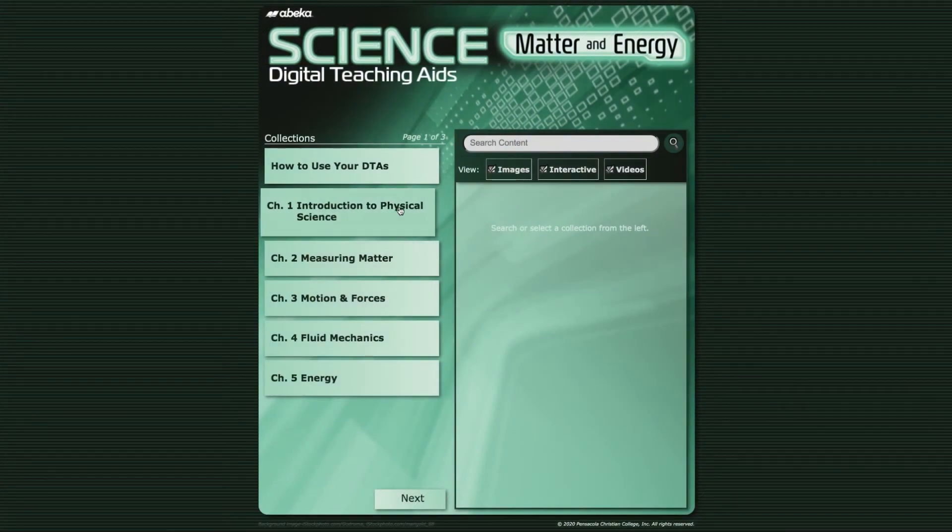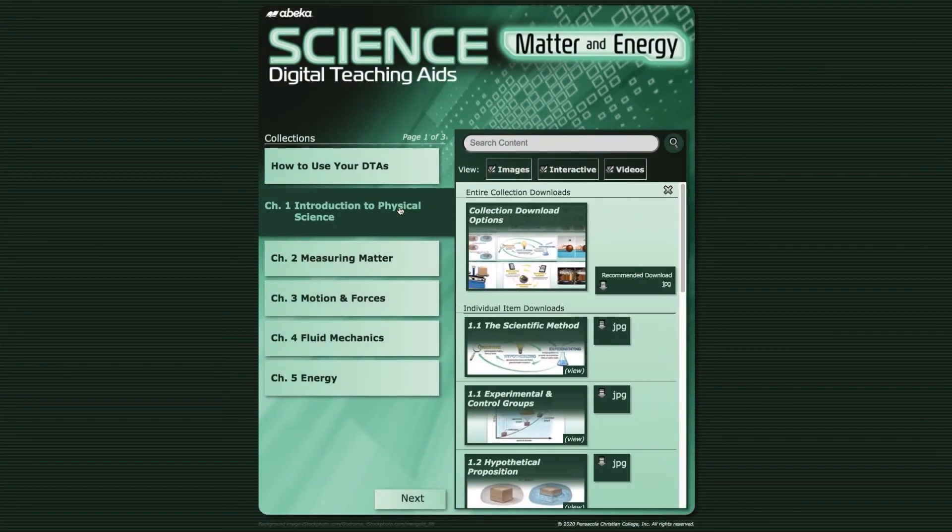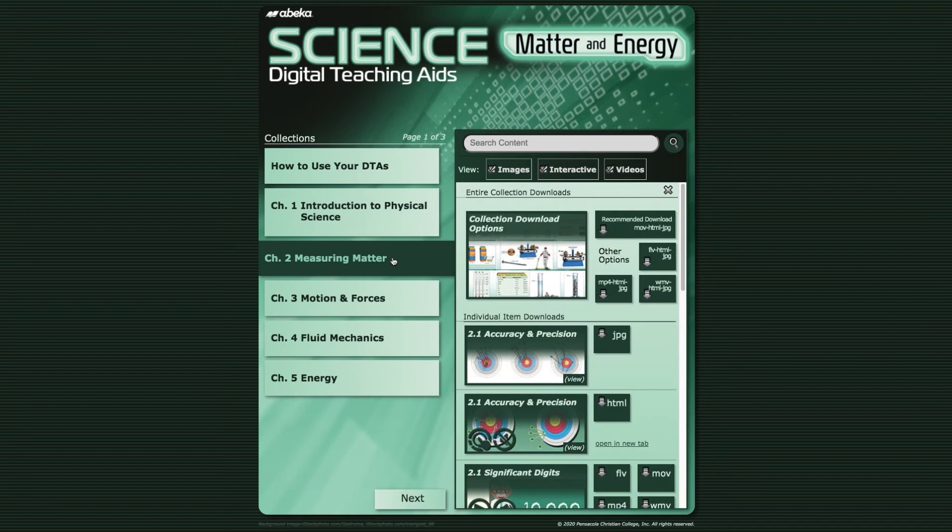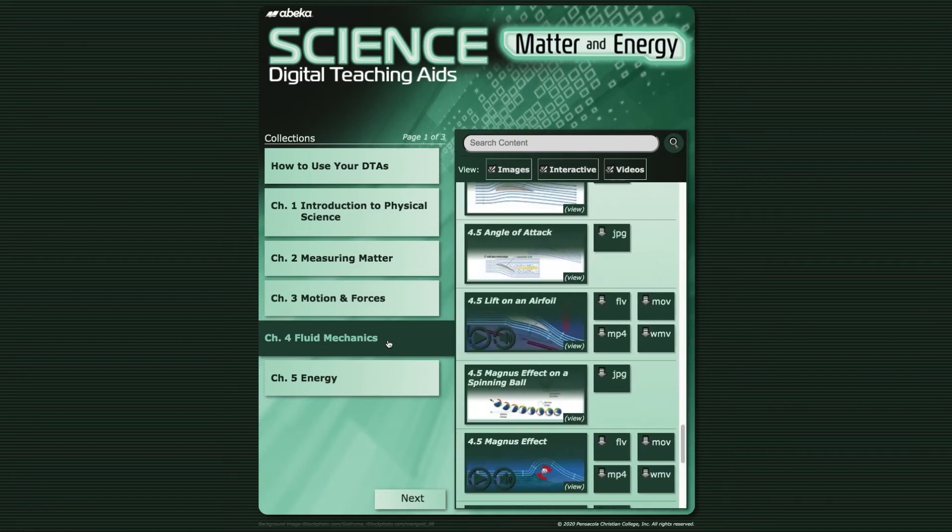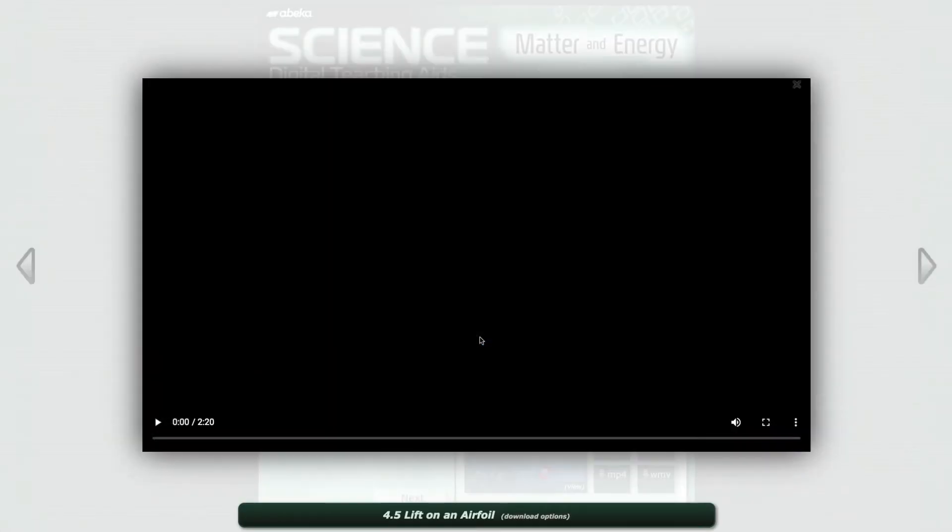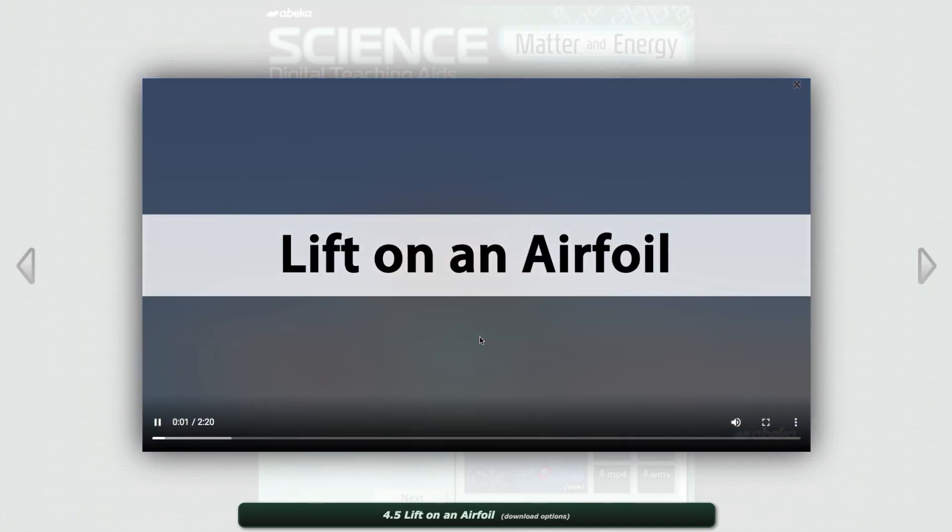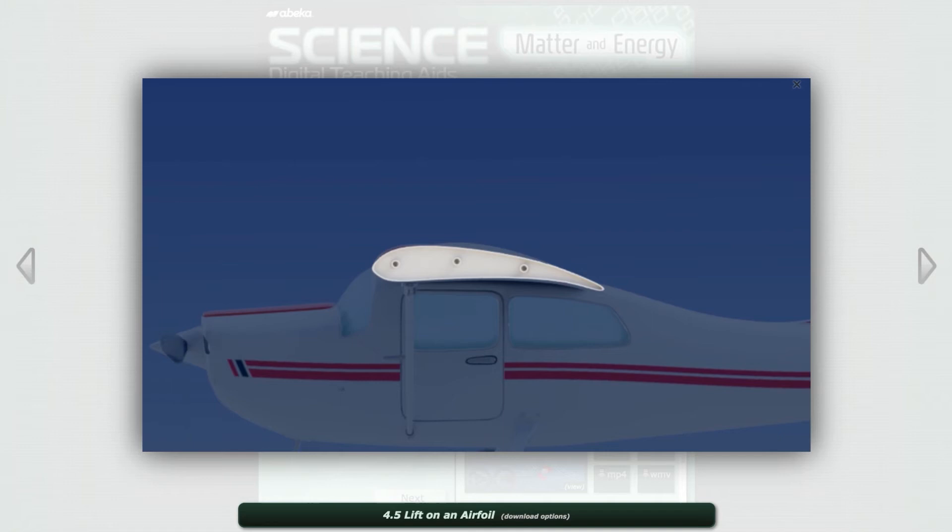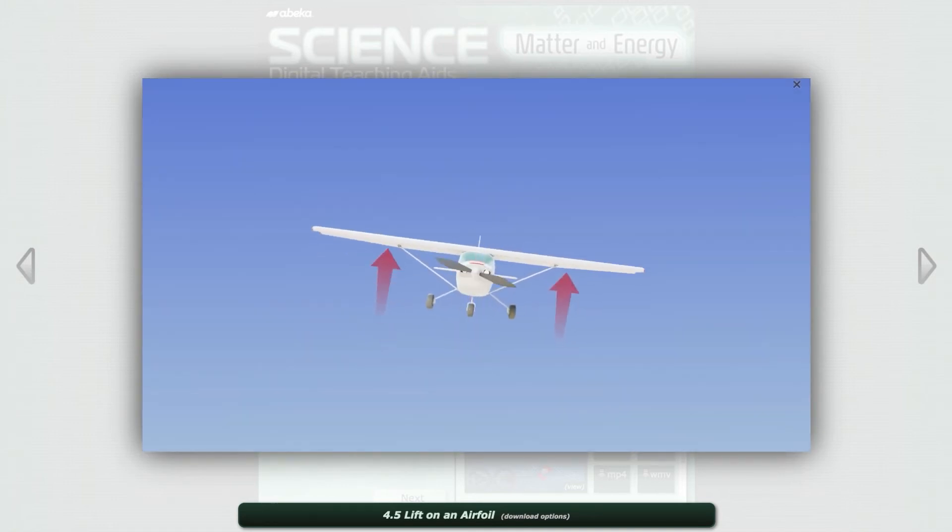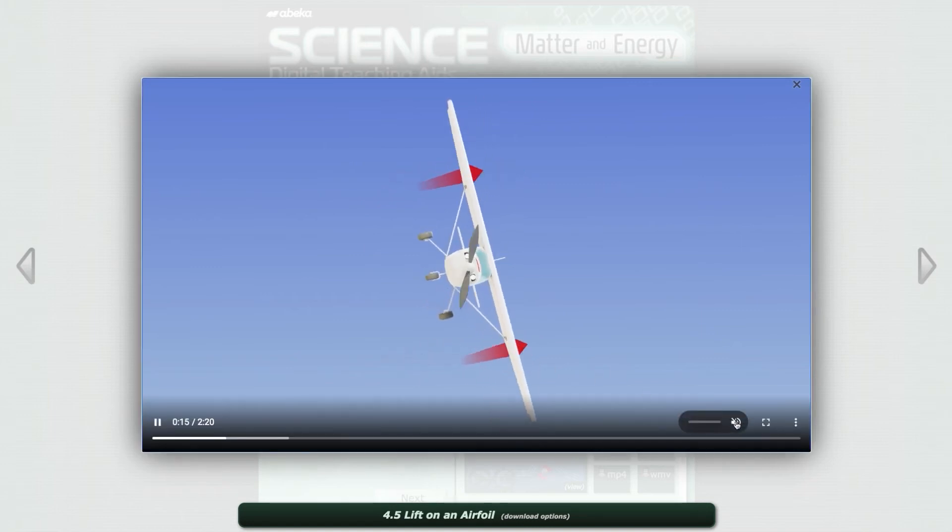This DTA package also includes videos that clearly show the different principles and processes of topics presented throughout the course. These videos include audio narration, which provide a step-by-step process for each topic, while also giving you the ability to pause and help students understand the process. One key to achieving successful flight is the airfoil, which produces lift. Lift results from how the foil causes the air around it to behave.